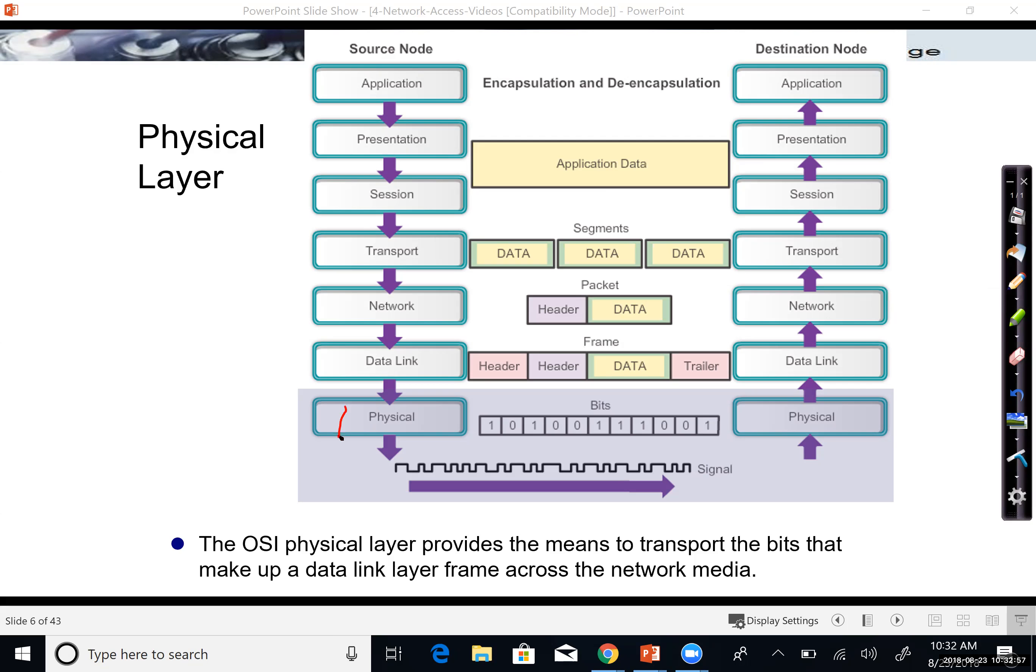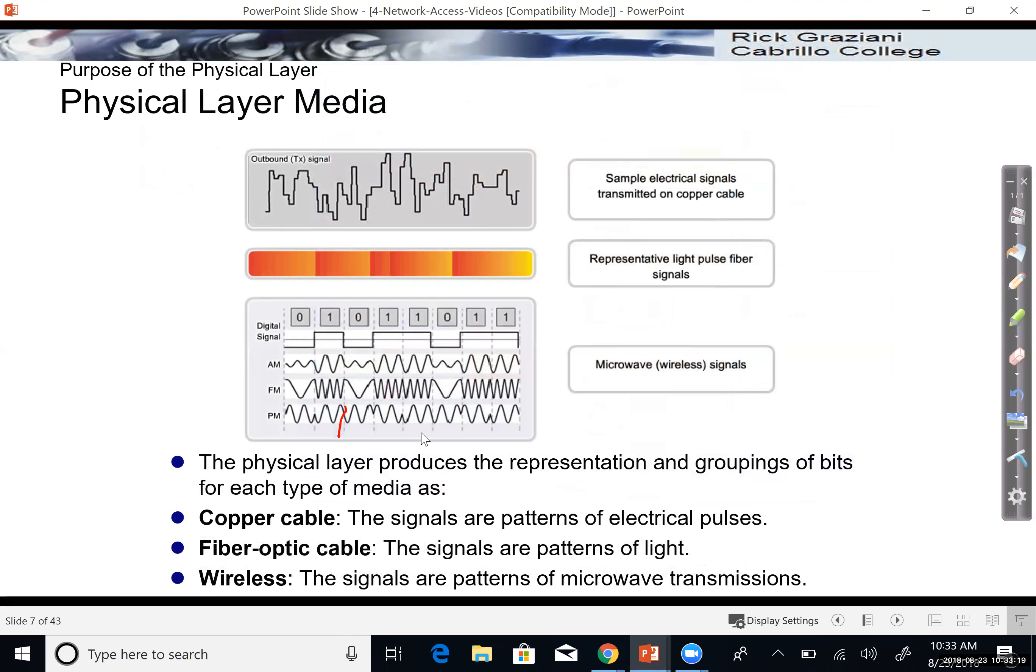In this video, I'm just going to introduce the physical layer. So let's take a look. Looking at our OSI model here, we can see that the physical layer is the lowest layer of the OSI model, layer 1. This is the layer that is responsible for actually converting the bits, transmitting those bits physically over the wired or wireless medium.